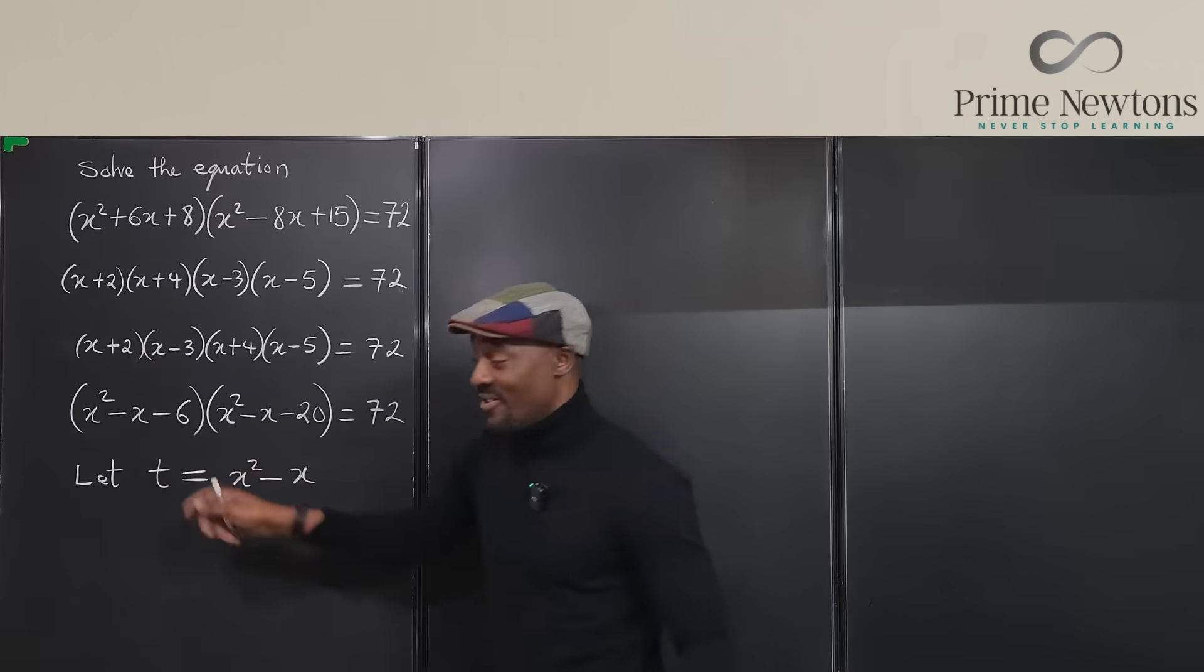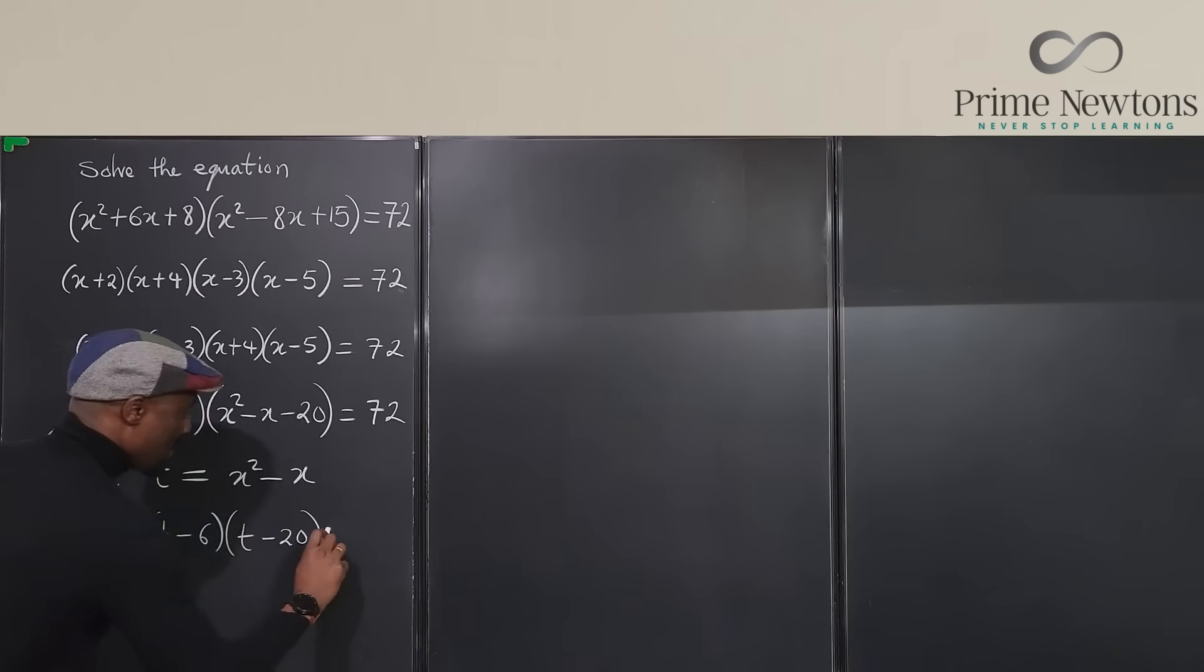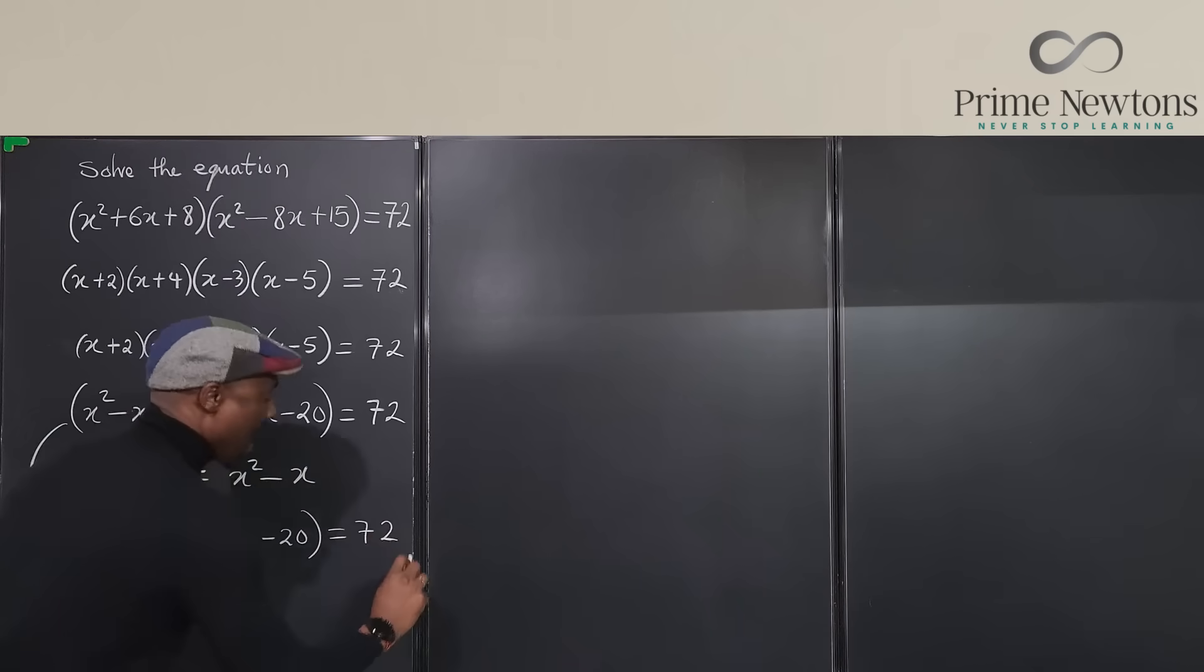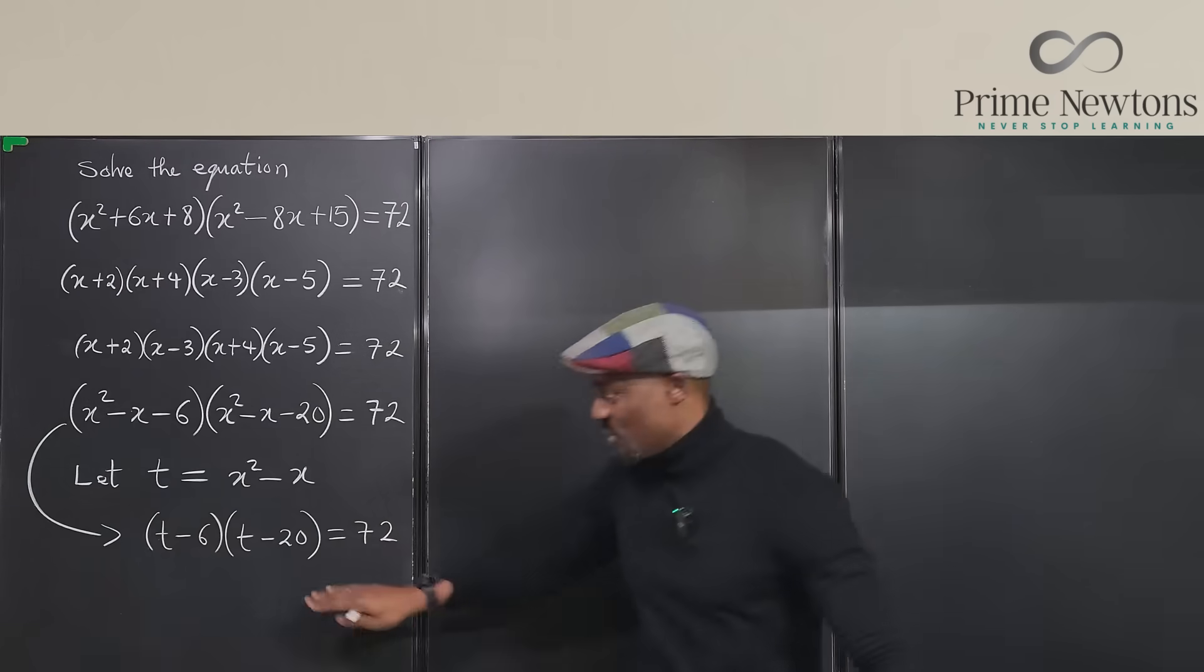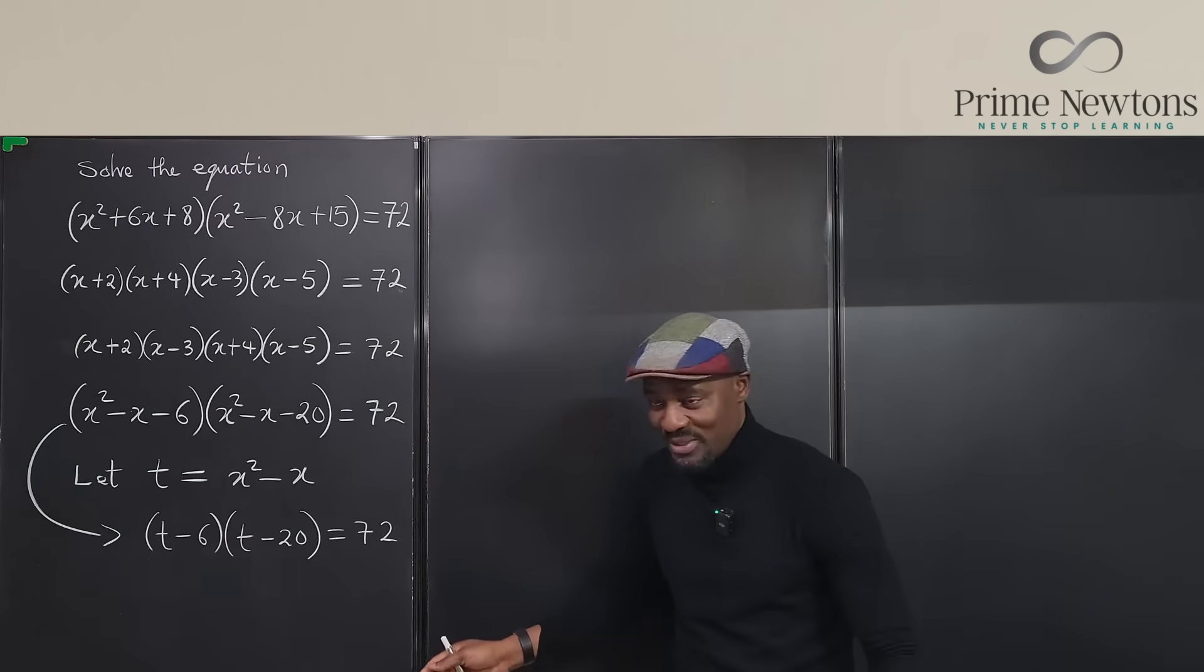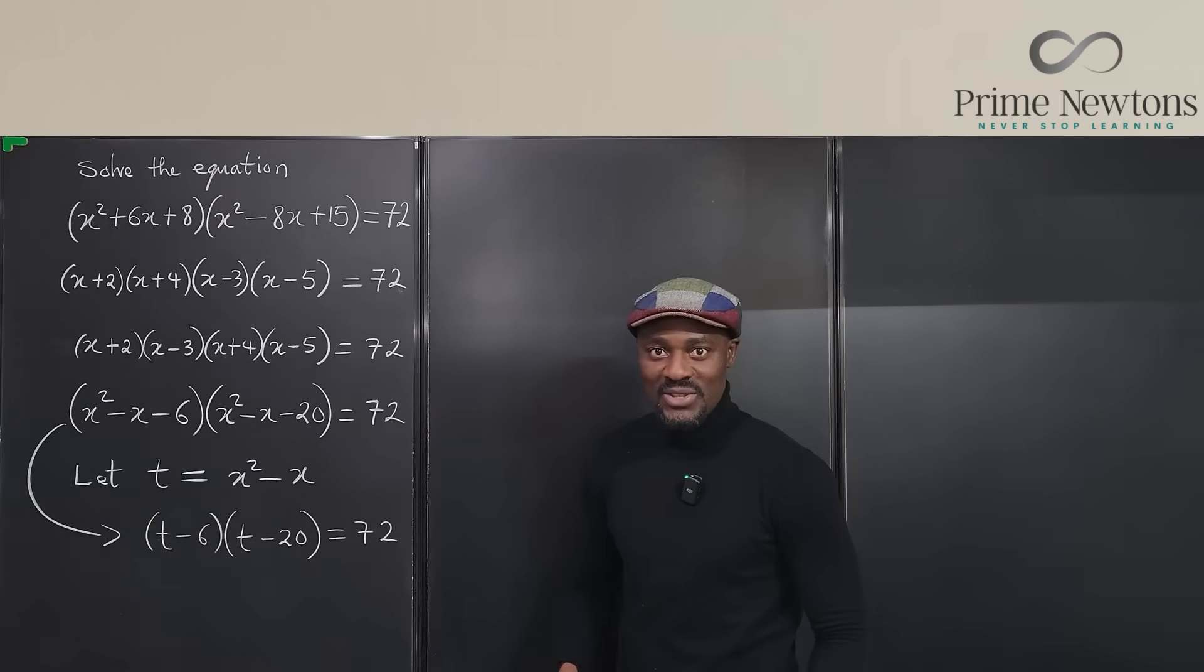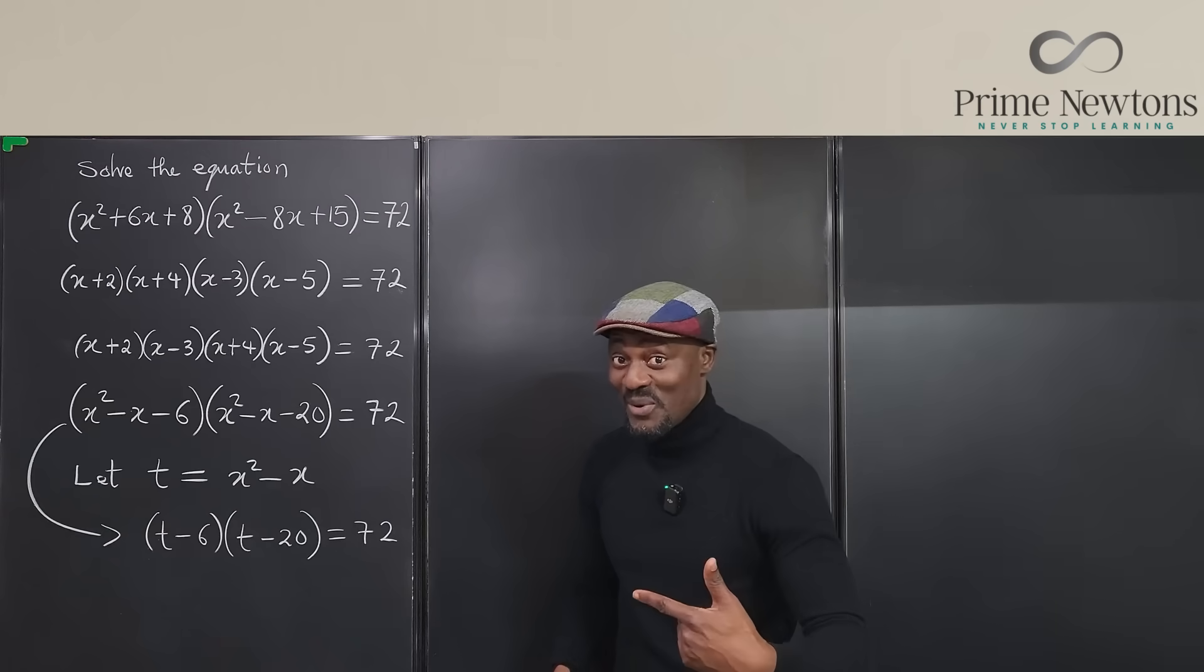You can rewrite this equation here as t minus six times t minus 20 is equal to 72. And I bet you every student can solve this one. Because although you cannot use the zero product property, at least you can distribute this and move the 72 to the other side. So that's what we're going to do.